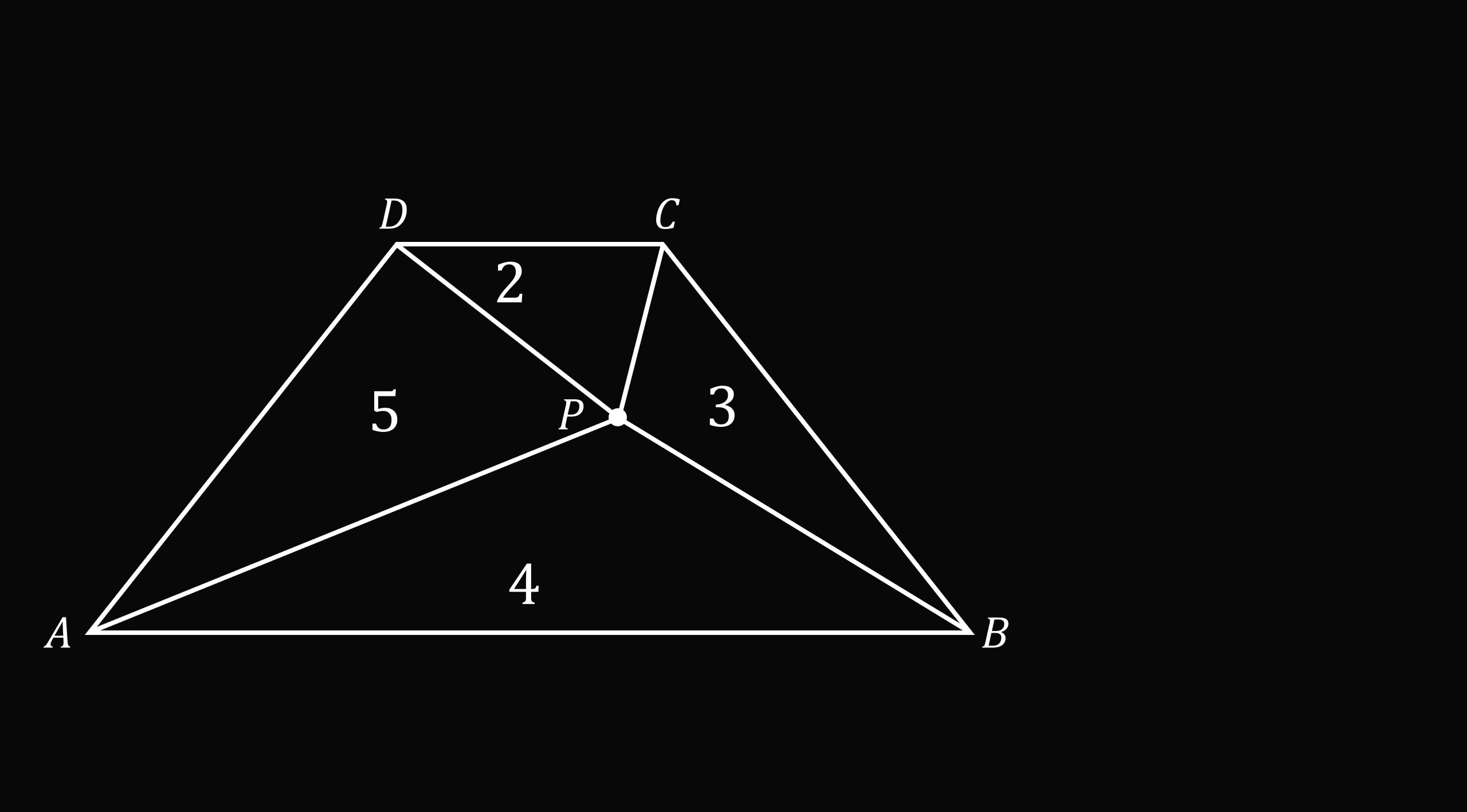To solve this problem, construct a perpendicular between the sides CD and AB that goes through the point P. Let the distance between point P and AB be equal to x, and let the distance between P and CD be equal to y.